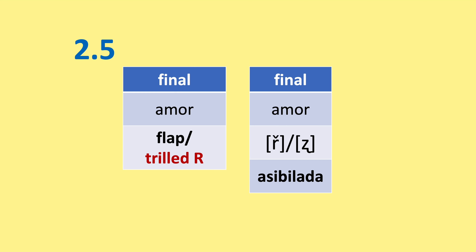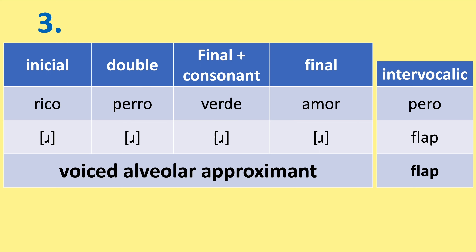The third R type is the R that you'll find in English. Examples: rico, perro, verde, amor. The intervocalic R will usually just be a flap. In some dialects of Portuguese, such as in São Paulo, you'll find this English-like R, but it's usually in the syllable-final consonant and final positions. So some Brazilians would say 'verde' and 'amor' just like these Spanish speakers.